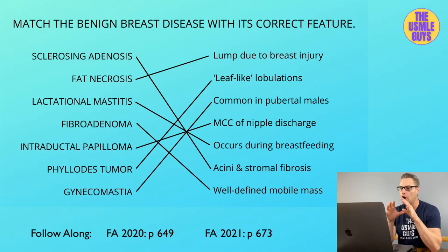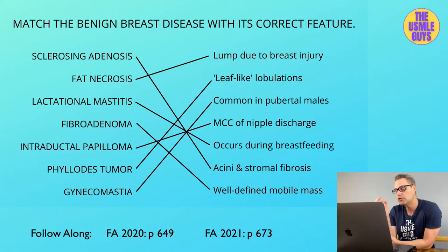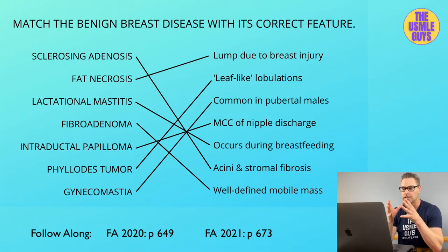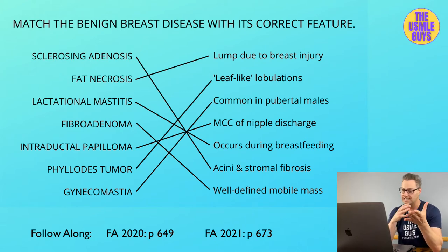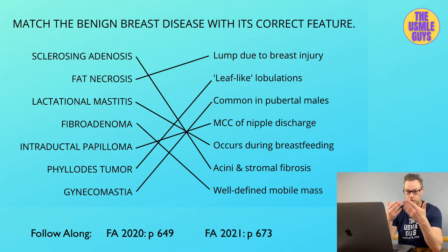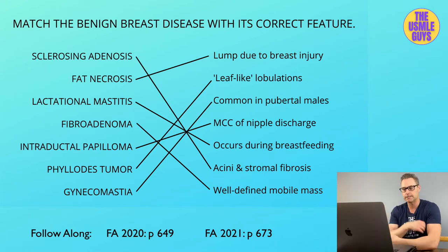The other condition is lactational mastitis, which is linked to breastfeeding. During breastfeeding, the nipples tend to dry out and crack, and if this happens, there's an increased risk of a bacterial infection getting through these cracks. The most common pathogen is Staph aureus. If this happens, we keep breastfeeding and treat with antibiotics — we only continue breastfeeding if it's not too painful, but it is safe.